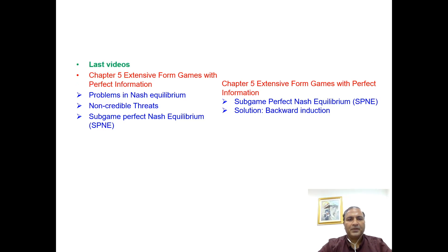Assalamu alaikum students. If you remember in the last video, I explained what are the problems of Nash equilibrium in case of dynamic games. We cannot use Nash equilibrium in dynamic games because it cannot remove non-credible threats. So what do we do in dynamic games? We use the concept called sub-game perfect Nash equilibrium.